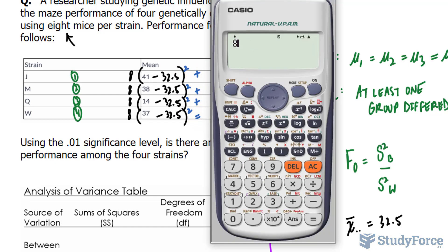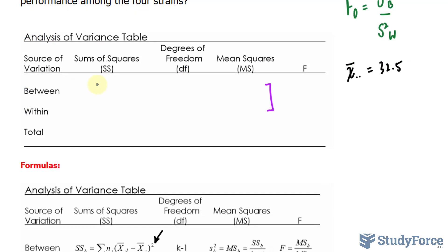You can use your calculator here. So 8, bracket 41 minus 32.5 raised to the power of 2, and the rest should look like this. I end up getting 3720. I'll write that down right here, 3720.